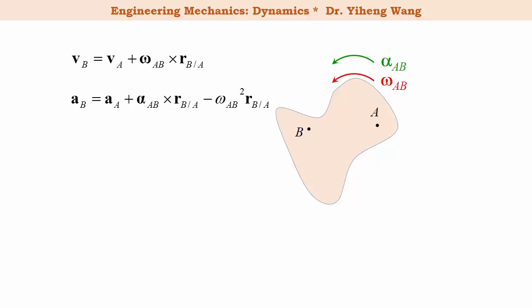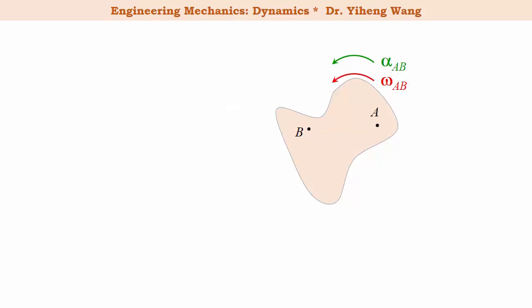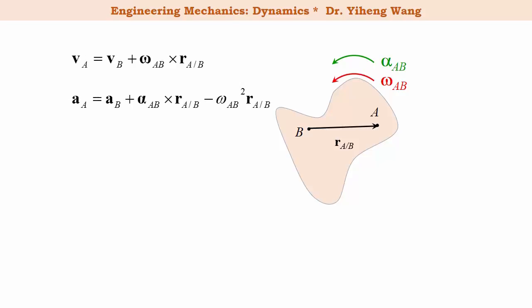These two equations apply to any two arbitrary points belonging to the same rigid body undergoing general plane motion. When writing these equations, you always choose a reference point — in our case point A — and the relative position vector is always drawn from the reference point, representing the relative position of B with respect to A. On the other hand, if we choose point B as the reference point and draw the position vector from B to A, we can write the two equations to find the linear velocity and linear acceleration of particle A.